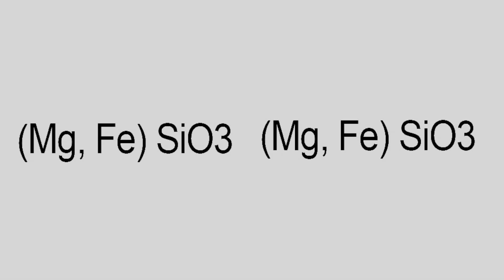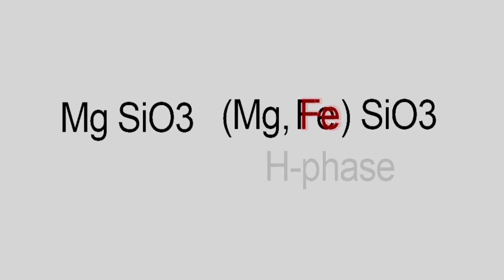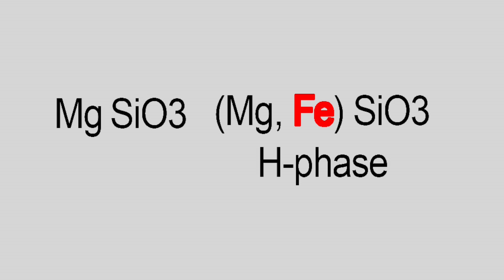The team finds that the mineral disassociates into two phases: one a magnesium silicate perovskite missing iron, which is represented by the iron portion of the chemical formula, and a new mineral that is iron-rich and hexagonal in structure, called the H-phase.